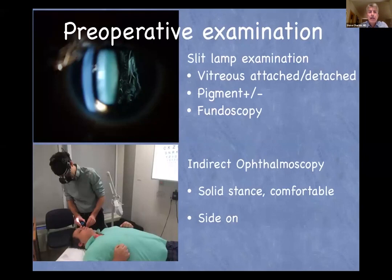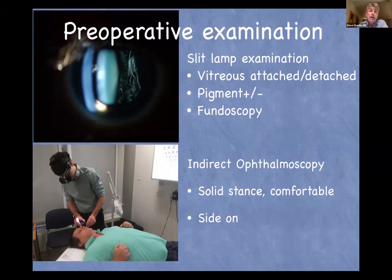In the pre-operative examination, you need to do a slit lamp examination to find out whether the vitreous is attached or detached — you can see in the slide here the crinkled surface versus a hyaloid face. We need to assess whether there is pigment in the vitreous gel, and of course we're using fundoscopy. Many trainees, probably quite understandably because of the wonderful indirect viewing handheld lenses we have, may not use the indirect ophthalmoscope regularly in clinic, so one is slightly worried about loss of skill over time.